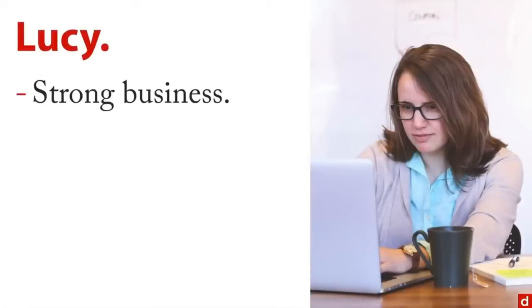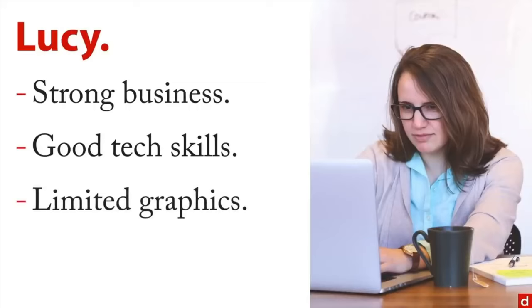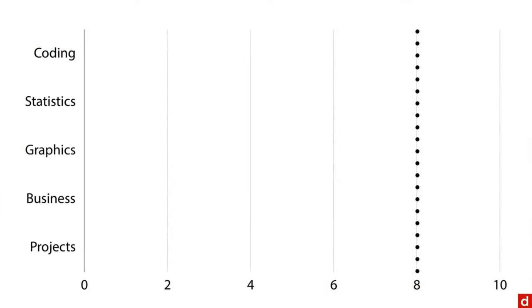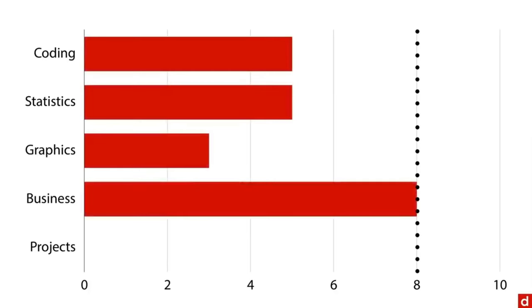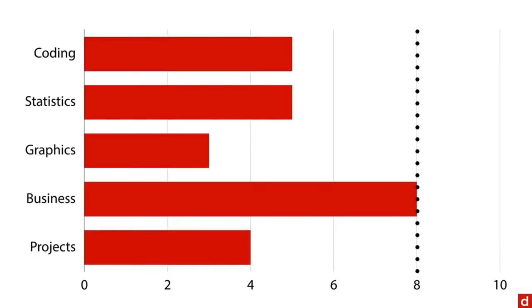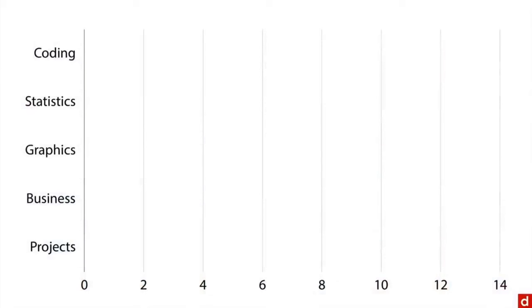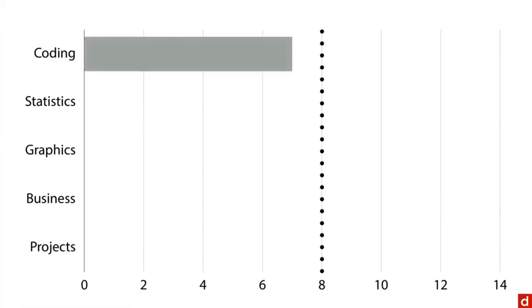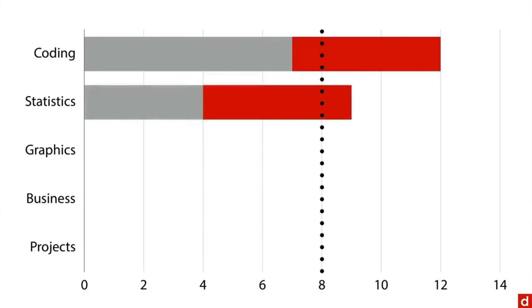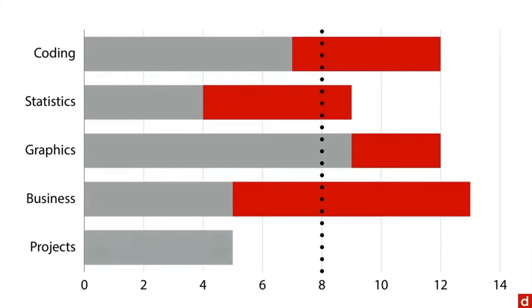Let's pair Otto with somebody else — Lucy. Lucy has strong business training and good tech skills, but limited graphics ability. On the same five areas: coding is pretty good, statistics pretty good, graphics not so much, business good, and projects okay. Now the important thing is that we can make a team. If we take Otto and Lucy and combine their abilities — adjusting the scale to accommodate both — our criterion is still a level of eight. Combined, coding is now past eight, statistics is past eight, graphics is way past, business way past, and projects is there too. When we combine their skills, we reach the level needed for everything.